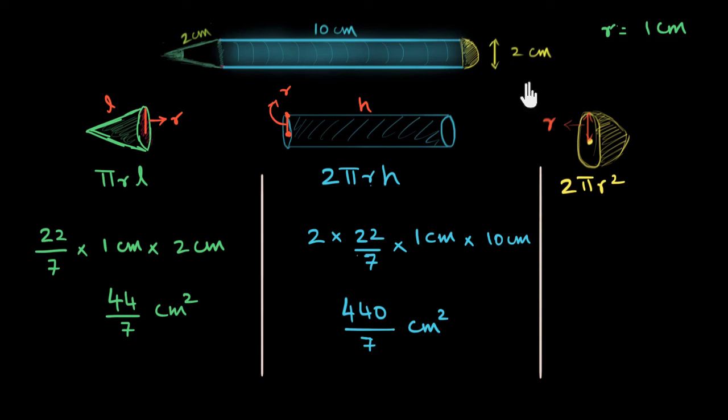Now you have this hemisphere over here, that's 2πr². So you're going to take 2 times 22/7 multiplied by r², r is 1, so 1 centimeter squared. And this is also going to be 44/7. That's a coincidence. In general, this and this need not have been equal at all.